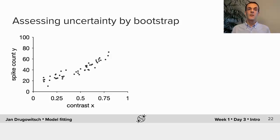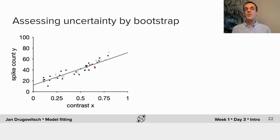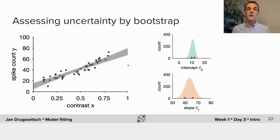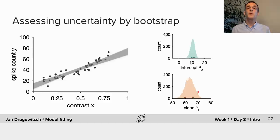To assess parameter uncertainty by bootstrap, we take our original data set — here given by 50 trials — and resample it with replacement to get another 50 trials. When doing so we sample some trials multiple times, shown here in black, and others not at all, shown here in gray. We can then fit our line to this resampled data to get an intercept and a slope. Repeating this resampling and fitting many times — here 10,000 times — gives us a whole range of model fits and associated parameters shown by a histogram over all the parameter values. The histogram provides us with an assessment of how uncertain we are about these parameter values. As we can see, the histogram is narrower for the intercept than the slope, meaning we're more certain about the intercept's value.